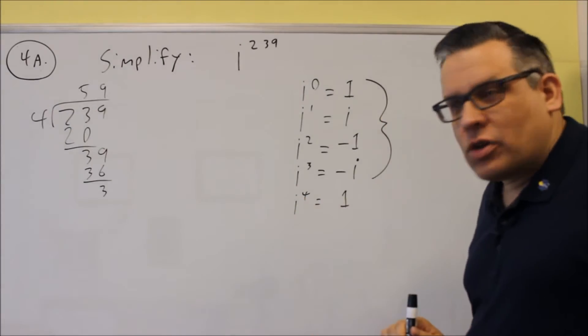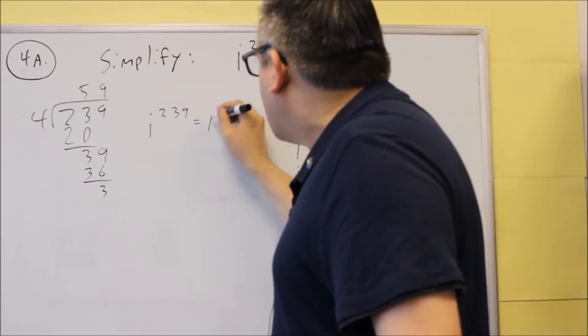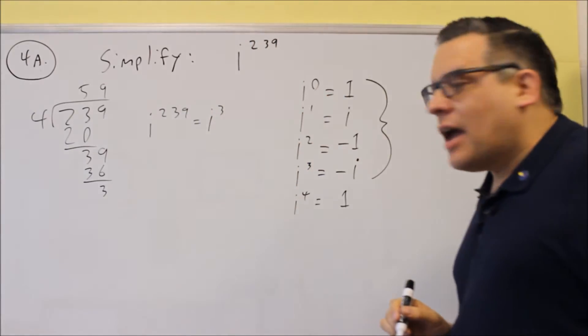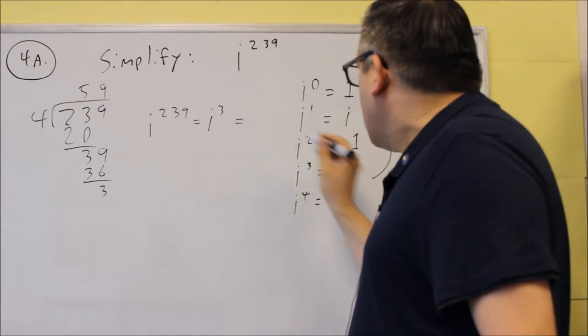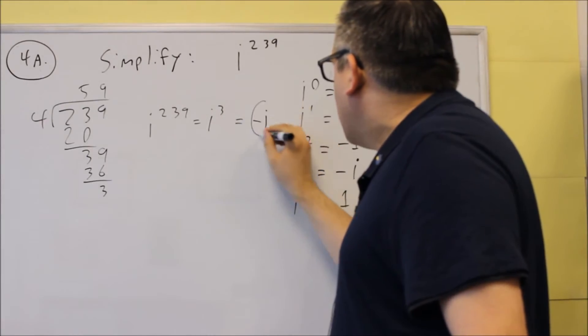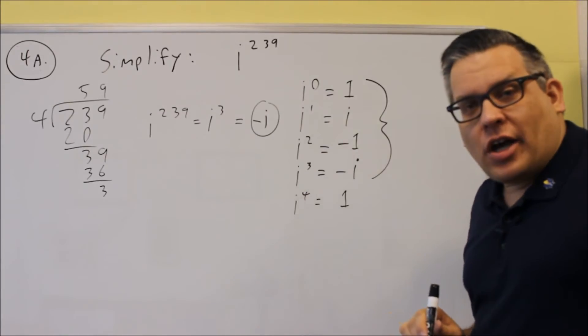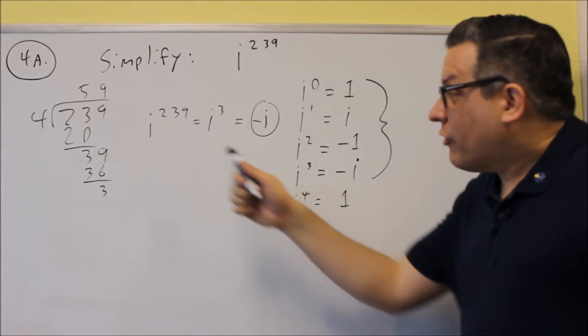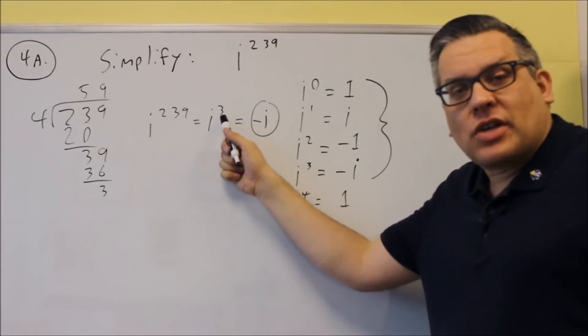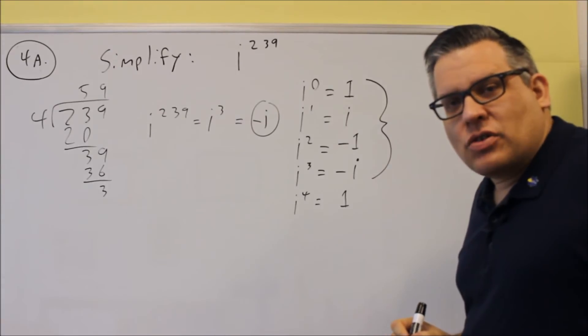So because I get a remainder of 3, what I can say is that i to the 239th power is the same thing as i cubed. But that's also equal to negative i. So what I would put on the test for the answer there would be negative i. You divide by 4, whatever the remainder is, that's the new power. And then you just look at the list and see which one of those it simplifies to.